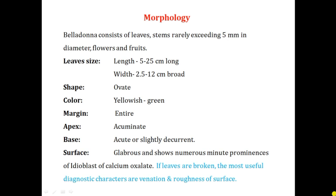Morphology: Belladonna leaves are 5 to 20 cm long and 2.5 to 12 cm wide. The shape is ovate; color is yellowish-green; margin is entire; apex is acuminate; base is acute and slightly decurrent. The surface is glabrous with minor prominences due to idioblasts of calcium oxalate crystals. When the leaves are broken, the two most important diagnostic characters are venation and roughness.